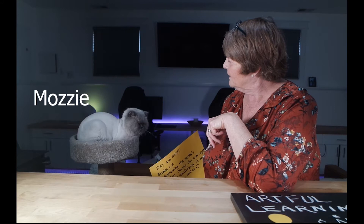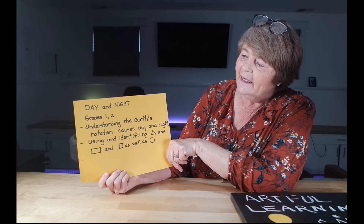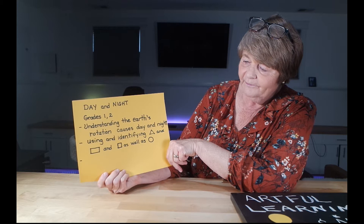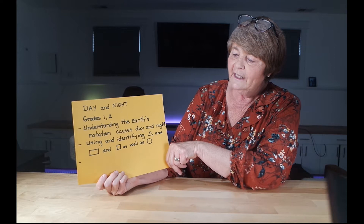Some of the things you're going to learn today in this Day and Night lesson for grades 1 and 2: it's about understanding how the earth's rotation causes day and night. It also uses and identifies triangles, rectangles, squares, and circles in the project.